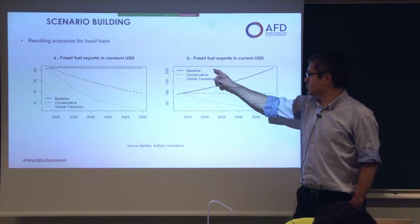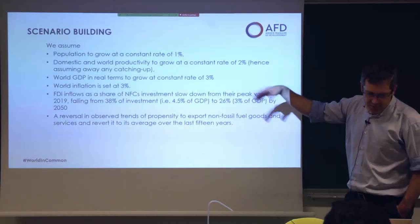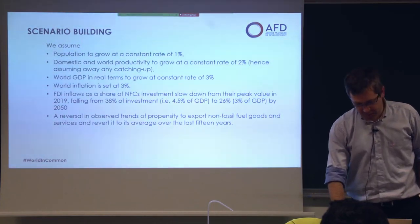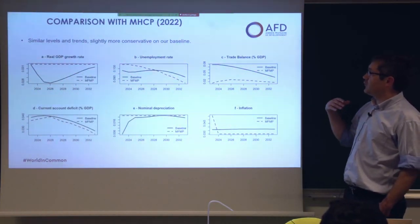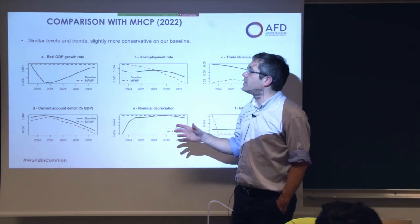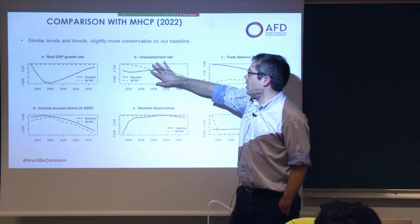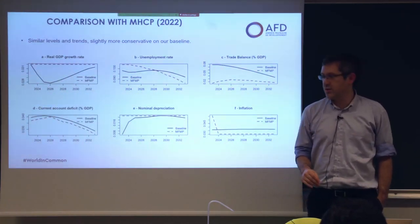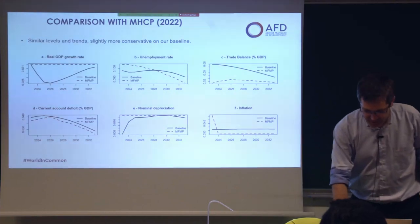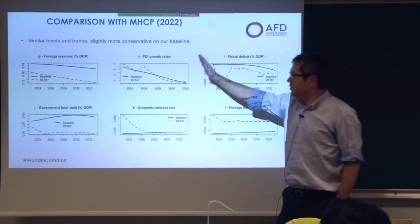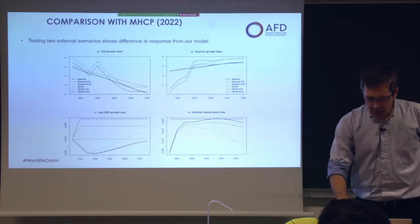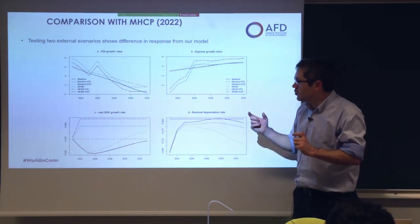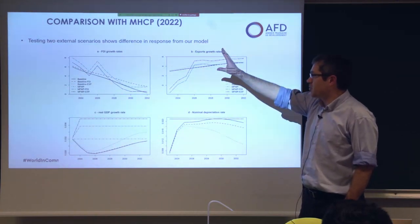We calibrated the model and tested it against the forecast by the Colombian Ministry of Finance (Hacienda). We found that fundamentally we agree on the baseline: similar real GDP growth rate, unemployment rate, trade balance, inflation, nominal depreciation, and current account deficit. So our model is not completely off — at least compared to Hacienda's model. We also compared the two models by running scenarios Hacienda proposed, to understand whether you actually need both models or if they tell the same story.